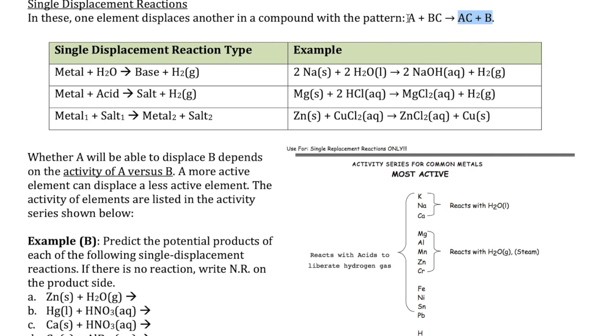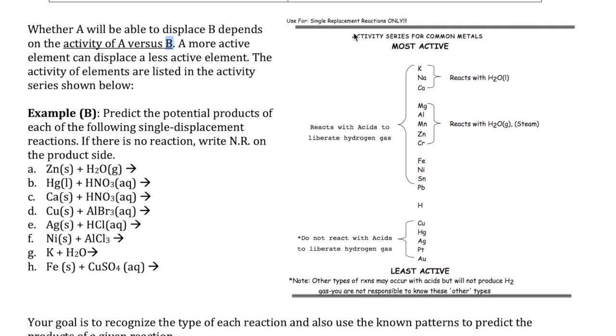It depends on whether A is strong enough to kick out the B, because A has to displace B in this case. Whether A will displace B or not depends on something we call the activity of A versus the activity of B. So if A is more active than B, then it will be able to displace B. If A is less active than B, then it will not. How do we know who's more active and who's less active? We use a table that we call the activity series, which is shown right here. And this is basically a ranking of elements and their activity, with the elements on the top being the most active and the elements at the bottom being the least active.